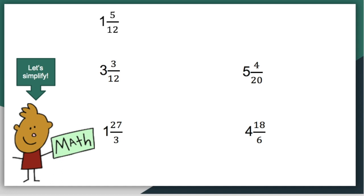Let's go to the second example: three and three over twelfths. Three and twelve have a common factor of three, so we can divide the numerator and the denominator by that same number. Three divided by three is equal to one. Twelve divided by three is four. Don't forget that we have a whole number here. So three and three twelfths is the same as three and one-fourth.